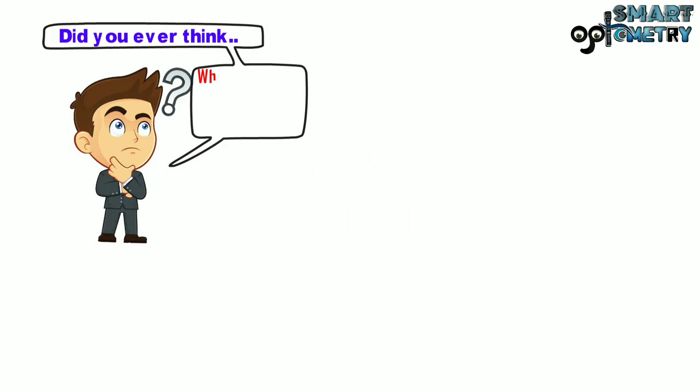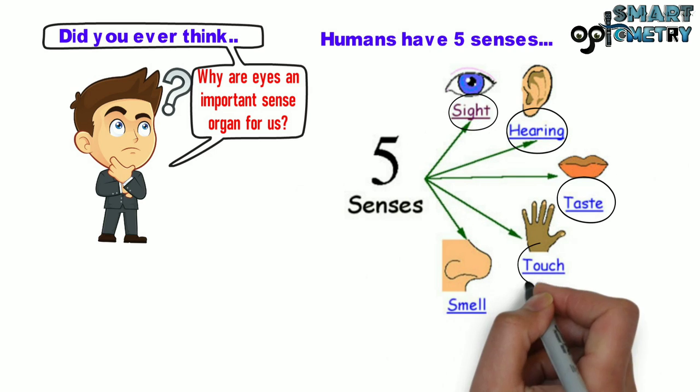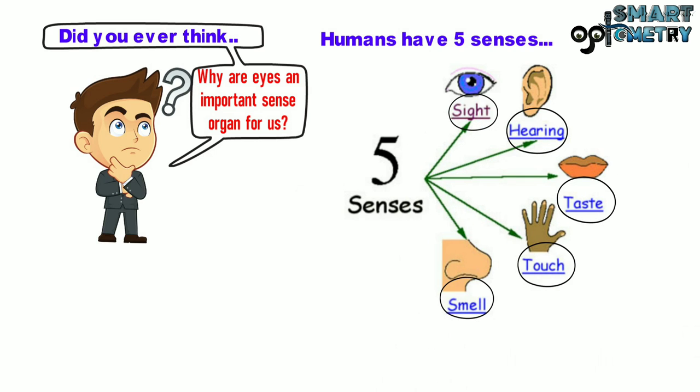Did you ever think why are eyes an important sense organ for us? Humans have five senses: sight, hearing, taste, touch, and smell. We use five organs: the eyes to see, the ears to hear, the tongue to taste, the skin to touch, and the nose to smell.